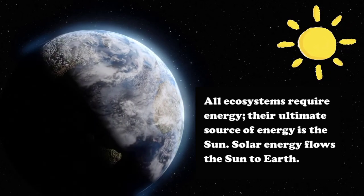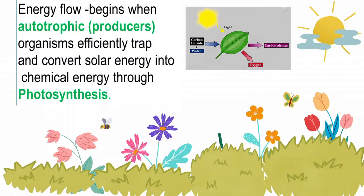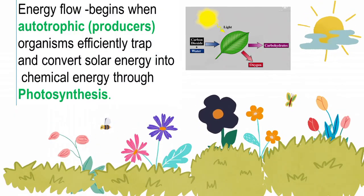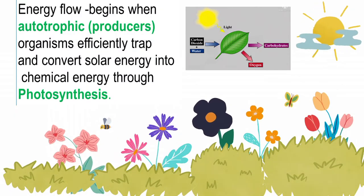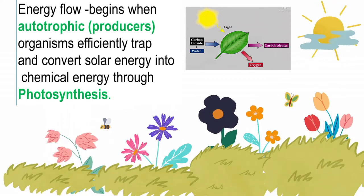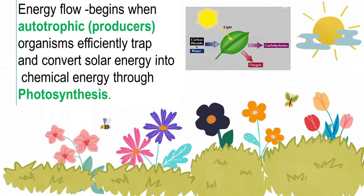Solar energy flows from the sun to Earth. Energy flow begins when autotrophic organisms efficiently trap and convert solar energy into chemical energy through photosynthesis.